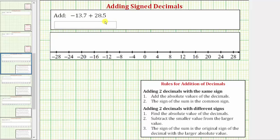Now let's find this sum using the formal rules for adding signed decimals, and then we'll look at the sum on the number line as well. Because we have a negative plus a positive, we'll be using the rules for adding two decimals with different signs.